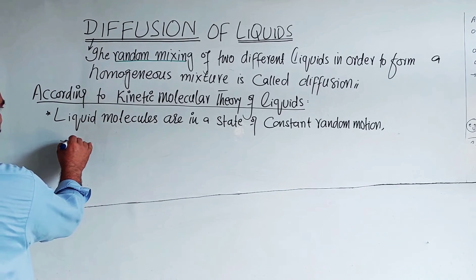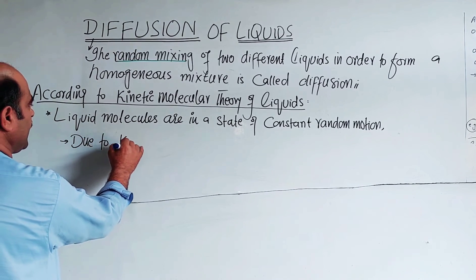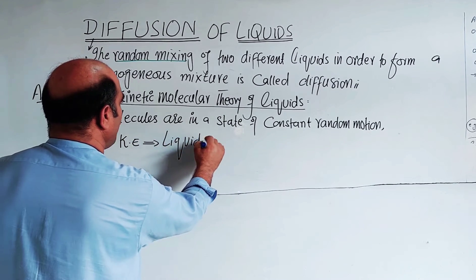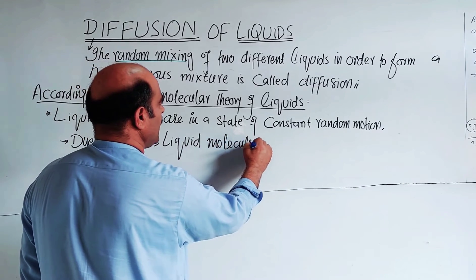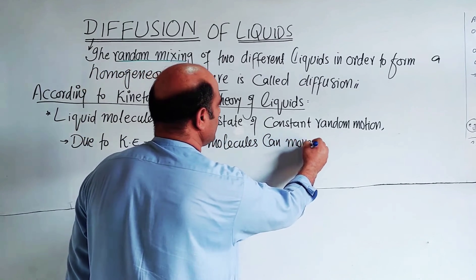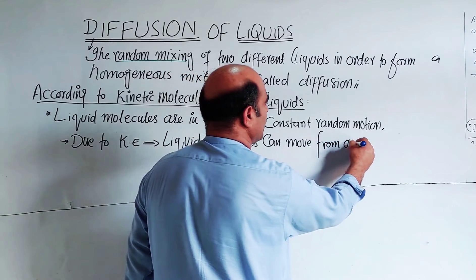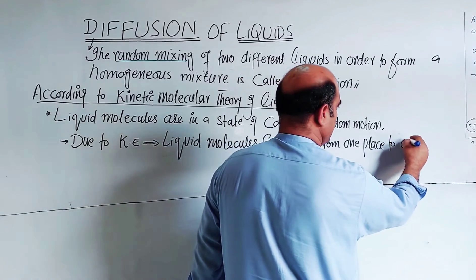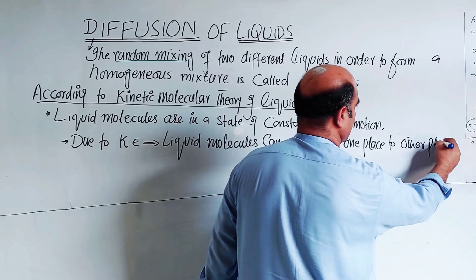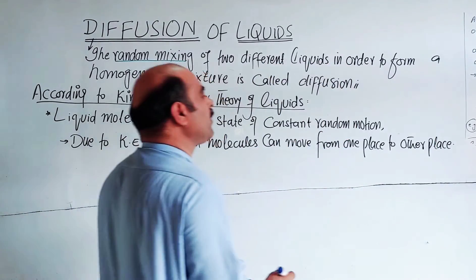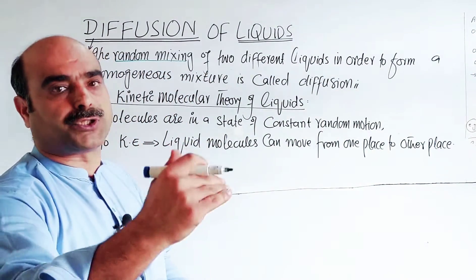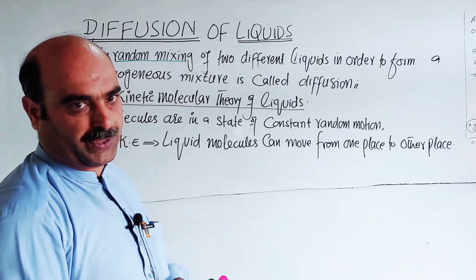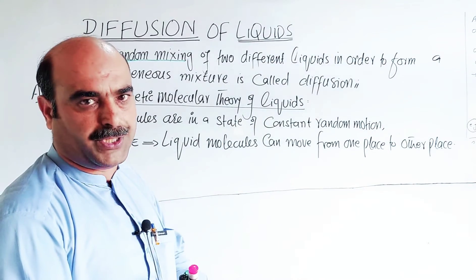Due to kinetic energy, liquid molecules can move from a place of high concentration to a place of low concentration. Kinetic energy is the energy due to the motion of a body. The liquid molecules can change their position from high concentration to low concentration.